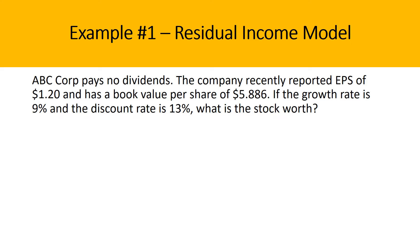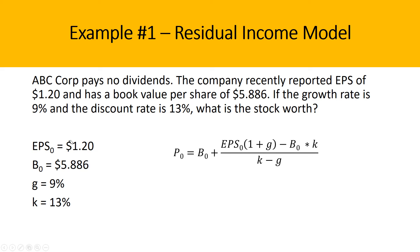Let's look at an example using this formula. ABC Corp pays no dividends. The company recently reported EPS of $1.20 a share and has a book value per share of $5.88. The growth rate is 9% and the discount rate is 13%. We identify the key variables: EPS in the base year is $1.20, book value per share in the base year is $5.88, growth rate is 9%, and discount rate is 13%.